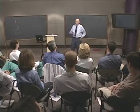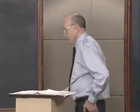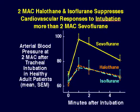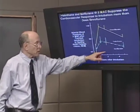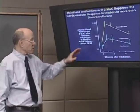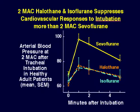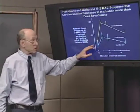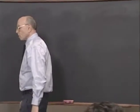MAC-bar is considerably above MAC itself, and so is MAC-IT. The anesthetics may not act equally to suppress the response to tracheal intubation—arterial blood pressure at 2 MAC after tracheal intubation may rise much more with sevoflurane than with halothane or isoflurane. This may be artifactual: maintaining 2 MAC is easier with more soluble agents, and with poorly soluble agents you may see a greater response.